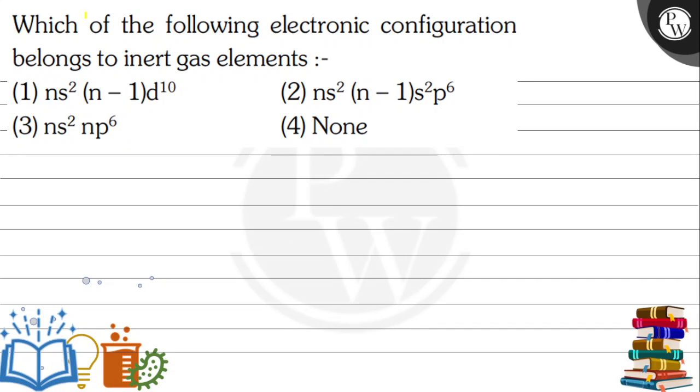Hello, let's see the question: Which of the following electronic configuration belongs to inert gas elements? Our options are: (1) ns² (n-1)d¹⁰, (2) ns² (n-1)s²p⁶, (3) ns² np⁶, and (4) none of the above.